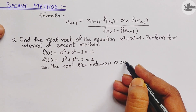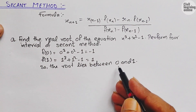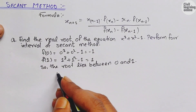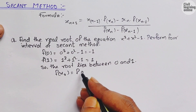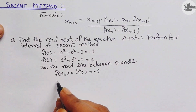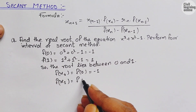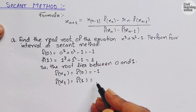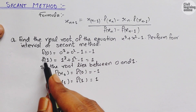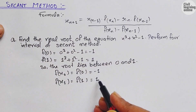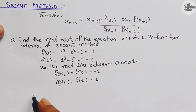So the root lies between 0 and 1. Since our root lies between 0 and 1, f(x₀) = f(0) = -1, and f(x₁) = f(1) = 1. Here f(0) corresponds to f(x₀) and f(1) corresponds to f(x₁). These are the values we have calculated, and now we begin applying the formula.